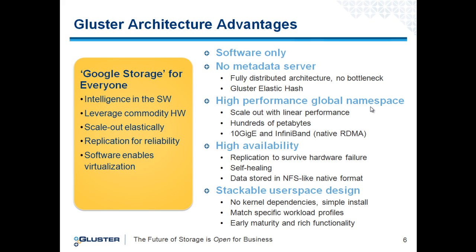From a performance standpoint, we support technologies like 10 gigabit Ethernet and InfiniBand to meet the most stringent performance environments. Availability is taken care of on multiple dimensions — we do file replication across two or more servers to ensure data is always available even in the event of hardware failure. In the event of a failure, which we assume will happen at some point, we have built-in mechanisms for self-healing. The data is stored in a native NFS-like format, ensuring it's always accessible with no proprietary data formats as a barrier.